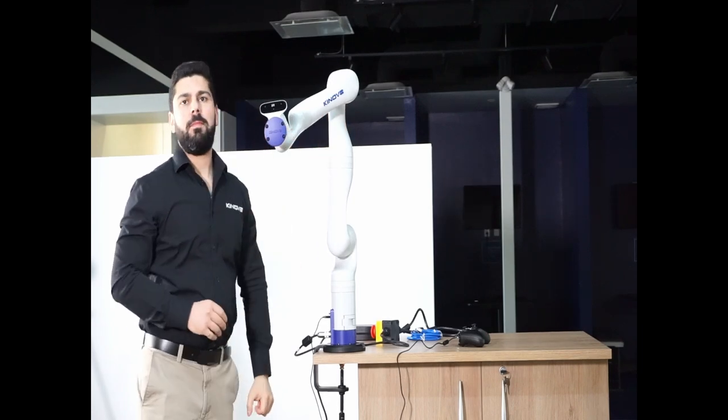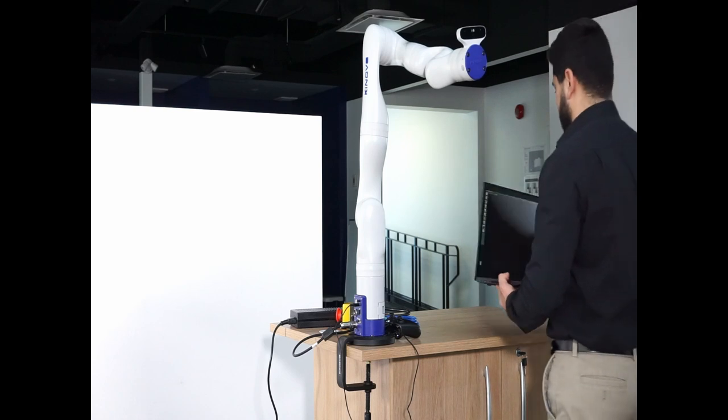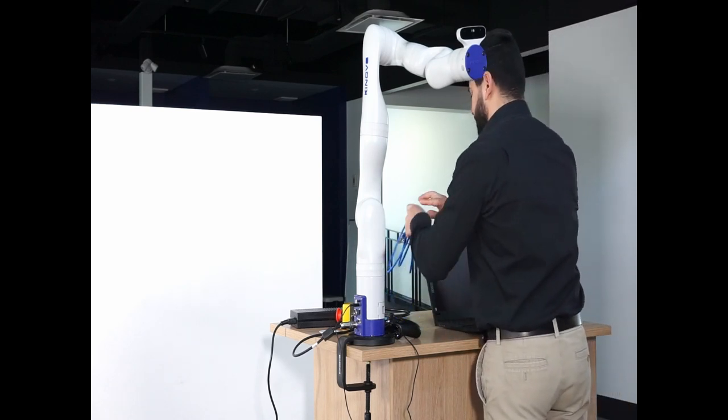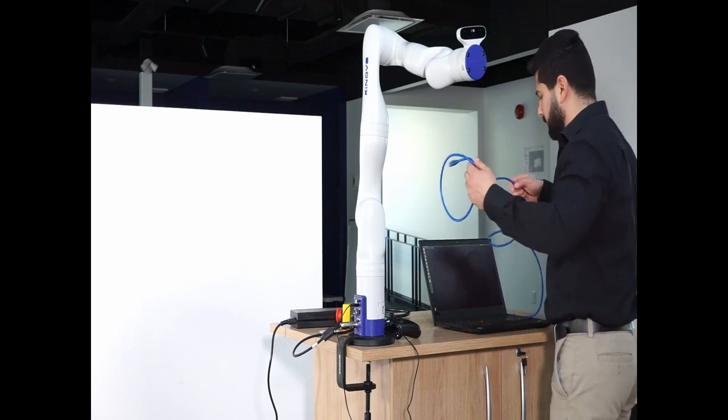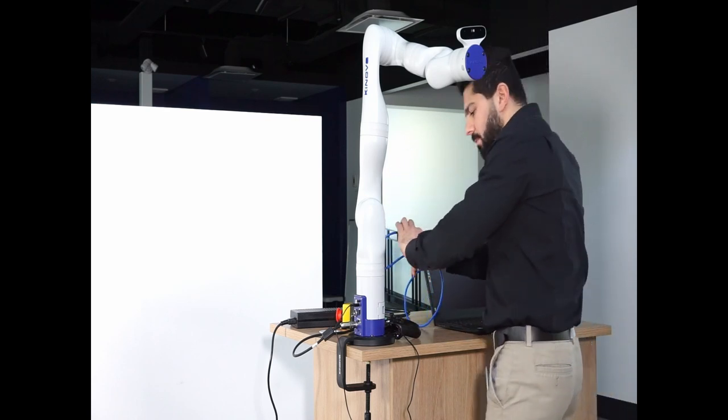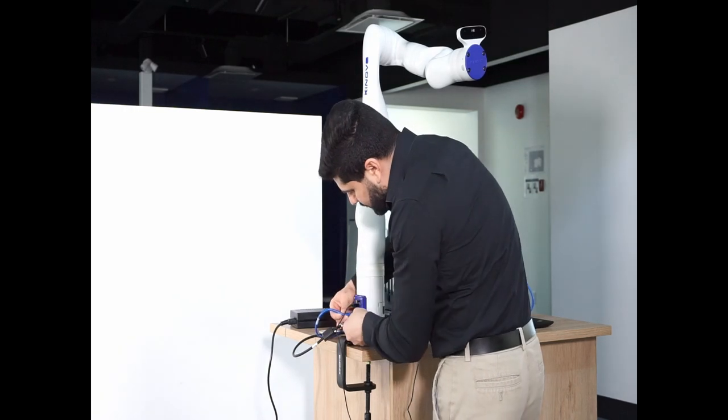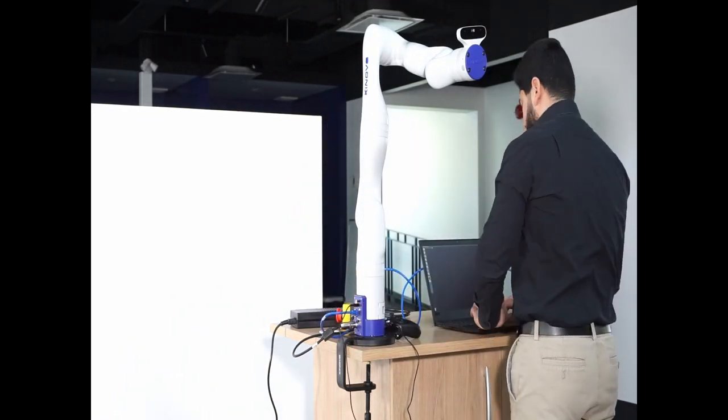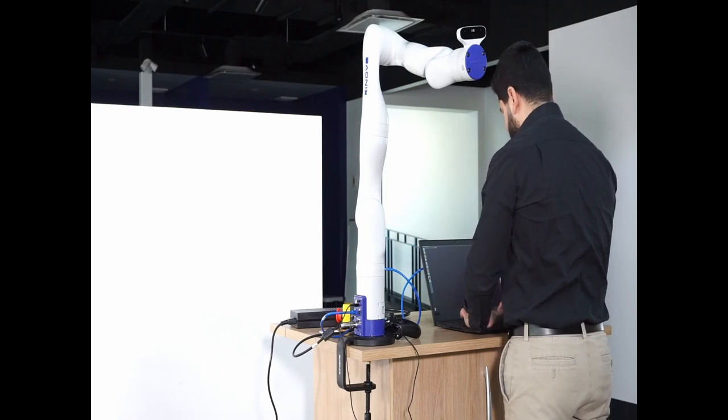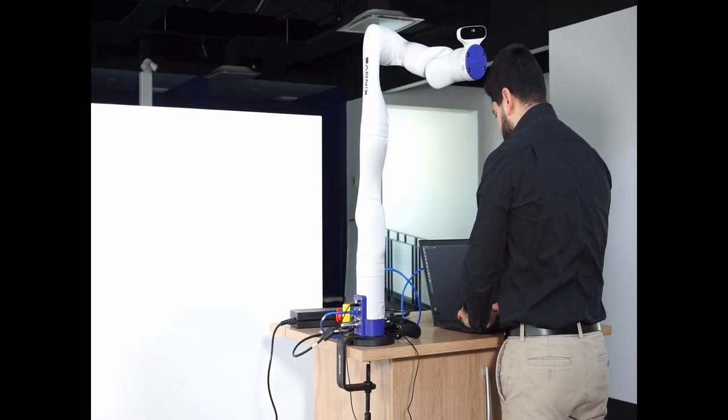Finally, you can control your robot using your computer through the web application or our API. To do this, you need to connect the Ethernet cable to your computer and to the Ethernet port of the base controller. The configuration of the communication between your computer and your robot will be presented in another video.